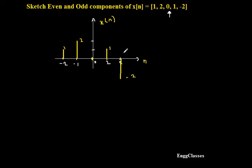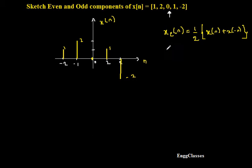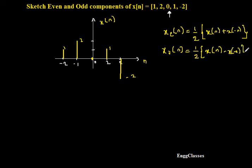Once I have sketched x[n], the next task is to find its even part and odd part. The even part formula is: x_e[n] = (1/2)[x(n) + x(-n)]. Similarly the odd part is: x_o[n] = (1/2)[x(n) - x(-n)].